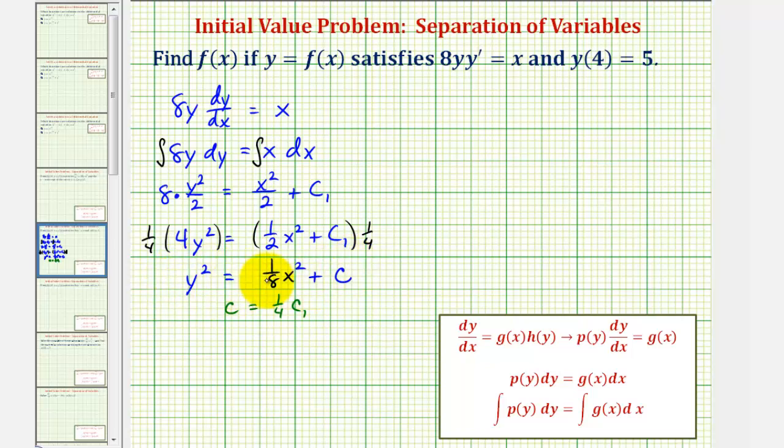And now if we square root both sides of the equation to solve for y, we would have y equals plus or minus the square root of 1/8 x to the second plus c. But notice how we're also told that y(4) equals 5, which means when x is positive 4, the y value is only positive 5, not negative 5, which means for this problem we don't need the plus or minus the square root. It's going to be just the principal square root or the positive square root.